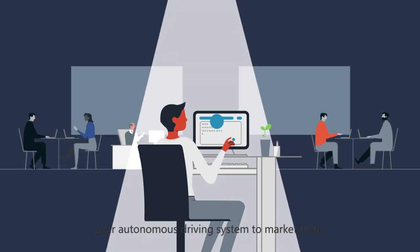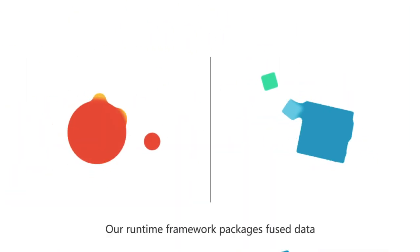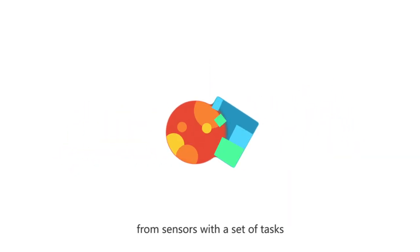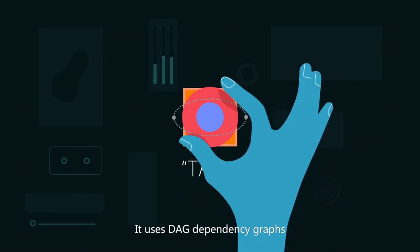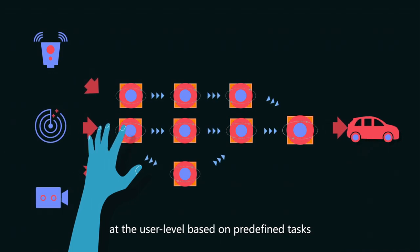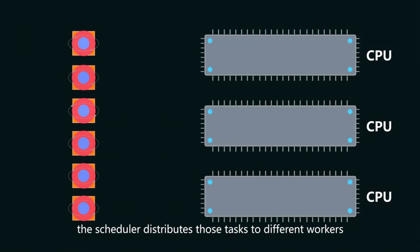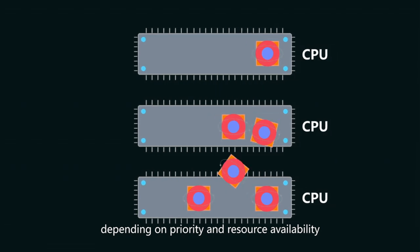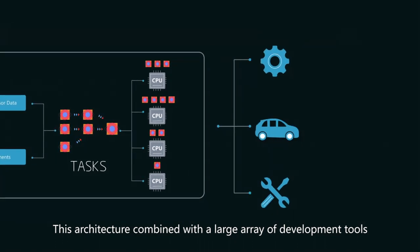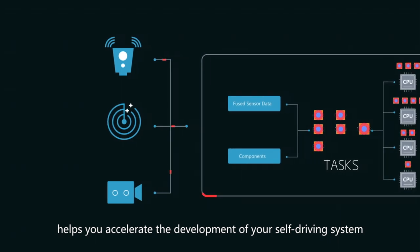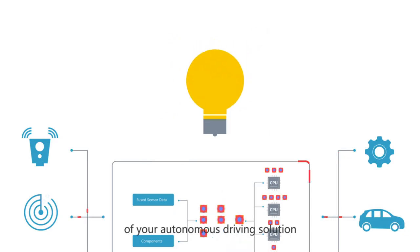The framework lets you bring your autonomous driving system to market faster without compromising its performance. Our runtime framework packages fused data from sensors with a set of tasks predefined based on their expected inputs and outputs. It uses DAG dependency graphs to generate lightweight threads at the user level based on predefined tasks. With task dependencies in mind, the scheduler distributes those tasks to different workers depending on priority and resource availability. This architecture, combined with a large array of development tools and pre-integrated sensor drivers, helps you accelerate the development of your self-driving system by letting you focus on the strategic aspects of your autonomous driving solution.